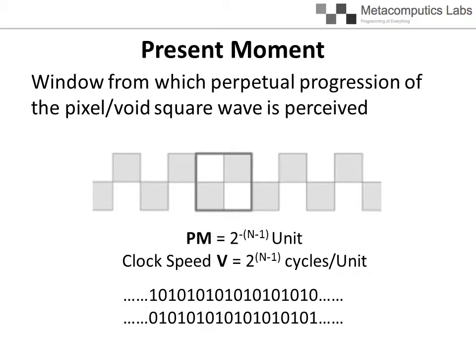The pixel square wave that defines time can be expressed as two rows of time bit strings of perfect regularity. Time bit strings can be regarded as a program. Time is perceived when a program is executed.